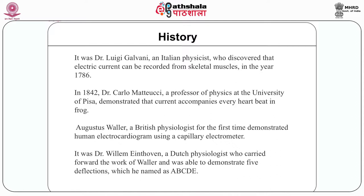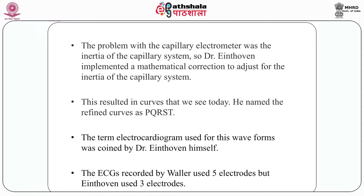Augustus Waller, a British physiologist, for the first time demonstrated a human electrocardiogram using a capillary electrometer. It was Dr. William Einthoven, a Dutch physiologist, who carried forward the work of Waller and was able to demonstrate five deflections, which he named ABCDE. The problem with the capillary electrometer was the inertia of the capillary system, so Dr. Einthoven implemented a mathematical correction to adjust for this inertia. This resulted in curves named PQRST, following the mathematical tradition established by Descartes.